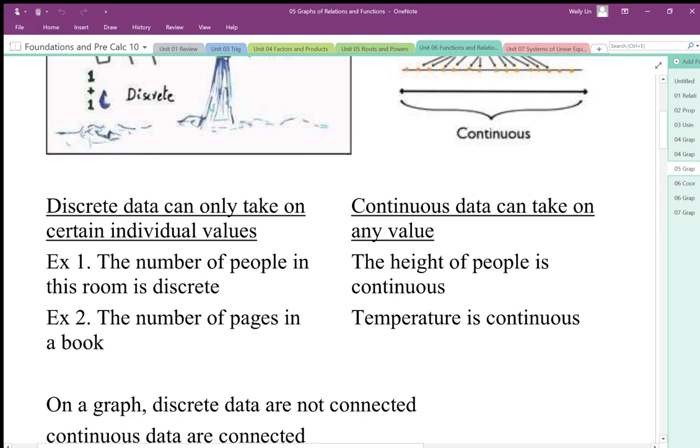Continuous variables are things that we can measure, like heights. A person can be 51.380 inches tall. Temperature is continuous as well. We could have a temperature of 17.8 degrees Celsius or 17.814 degrees Celsius.